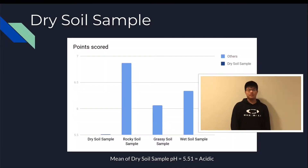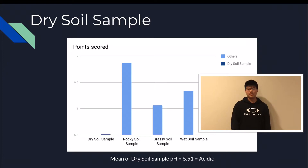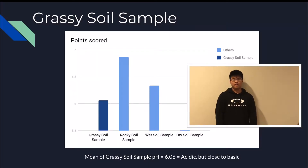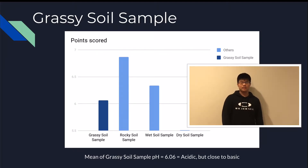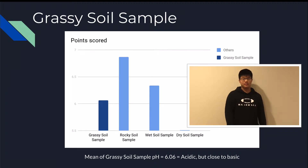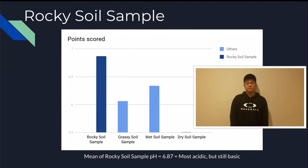Based on the mean of the dry soil sample pH, we found that it is the most acidic at 5.51, which is under 7. Based on the average of the grassy soil sample pH, we found that it's close to basic but not yet basic, as it was 6.06, which is less than 7. The average pH of the rocky soil was 6.87, so it's almost neutral but still acidic.